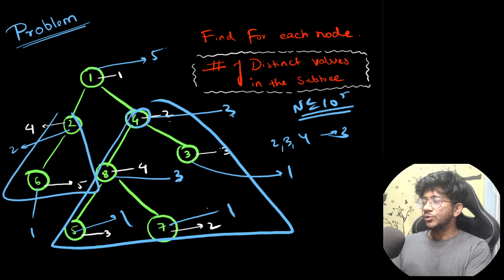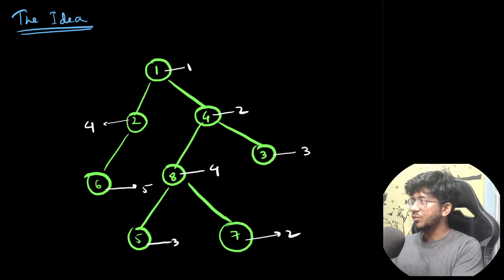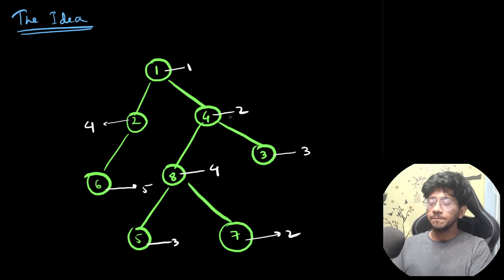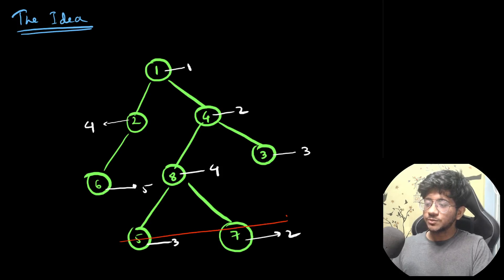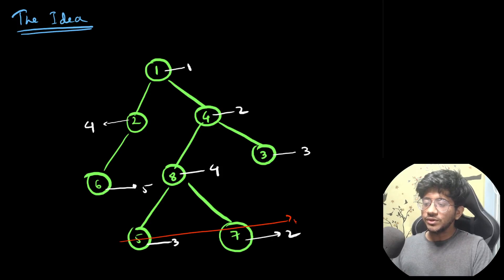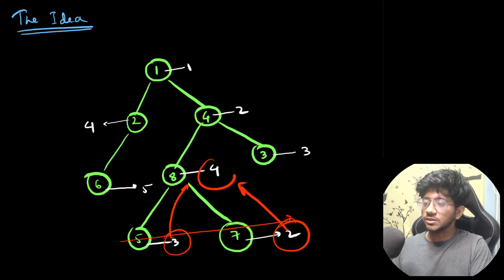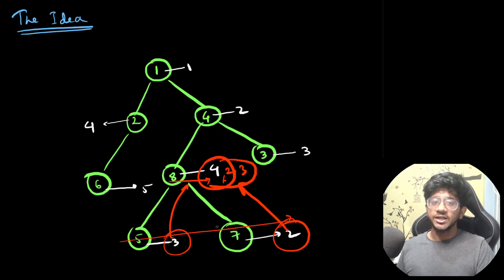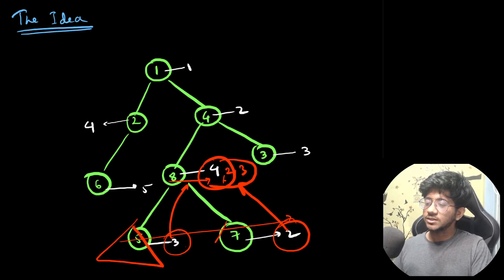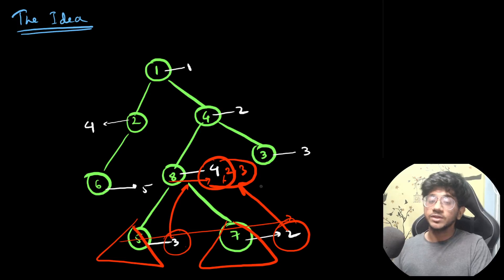To understand what we're trying to do: for every node we have a value. Finding answers for leaf nodes is easy. Once those are done, we don't need those individual numbers anymore. What we can do is push them up and merge with the parent's value to create a set like {2, 3}. So now that node has its distinct values ready. If you push all distinct numbers from each child subtree up and merge at the parent, you have all distinct values ready there.